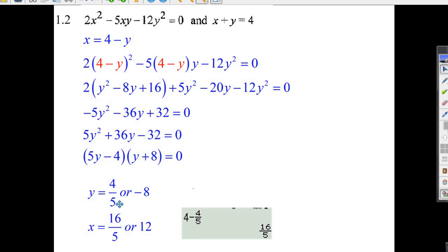Now that we have y, all we do is take these y values and put it back in here, 4 minus 4 over 5. You should know that 20 over 5 is 4, minus 4 is 16 over 5. But you could use your calculator to do that. And then 4 minus minus 8 is 4 plus 8. That's 12. So, there's the answer to that one.